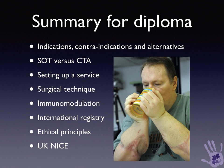For the diploma, think about indications, contraindications, and alternatives such as prosthetics. Understand the difference between solid organ and composite tissue transplantation. Consider how you would set up a service and the surgical technique for a macro-replantation. Understand immunomodulation and monotherapy, and the fact that rejection can be monitored with topical agents and assessed via skin biopsies. There is an international registry. Understand ethical principles of hand transplantation. The UK NICE guidance was reported in 2011.